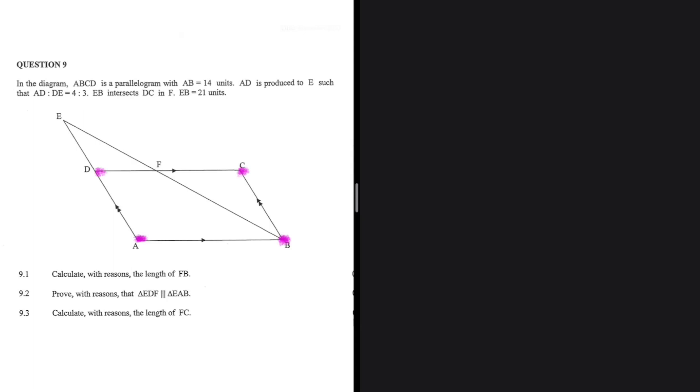ABCD is a parallelogram with AB being equals to 14 units. AD is produced to E such that AD is to DE is equals to 4 is to 3. So AD is to DE is 4 is to 3.